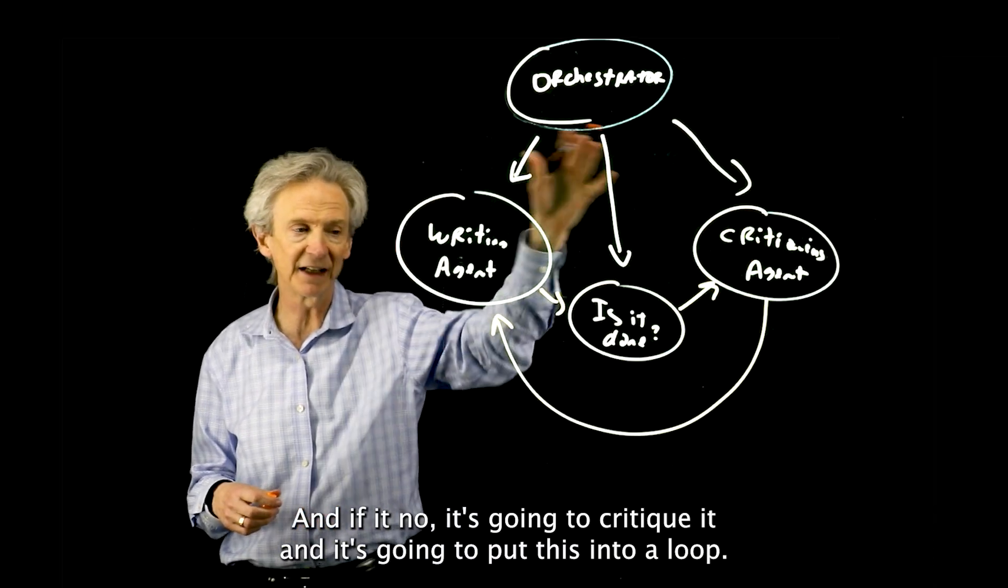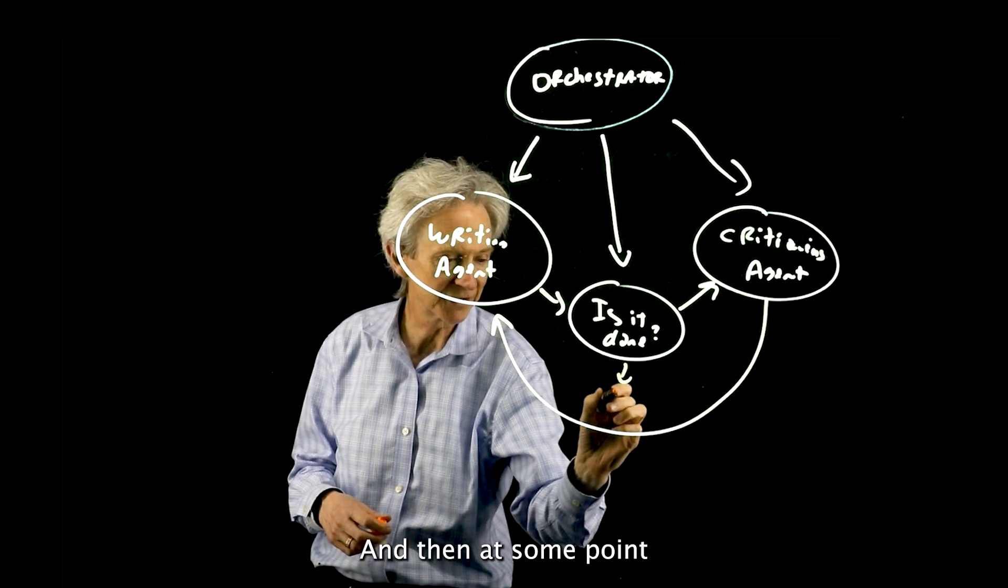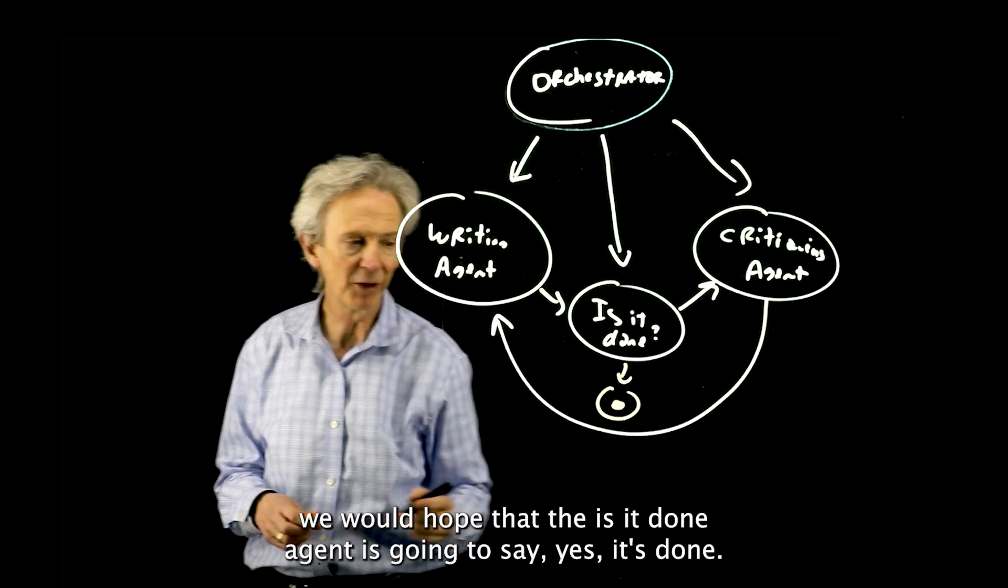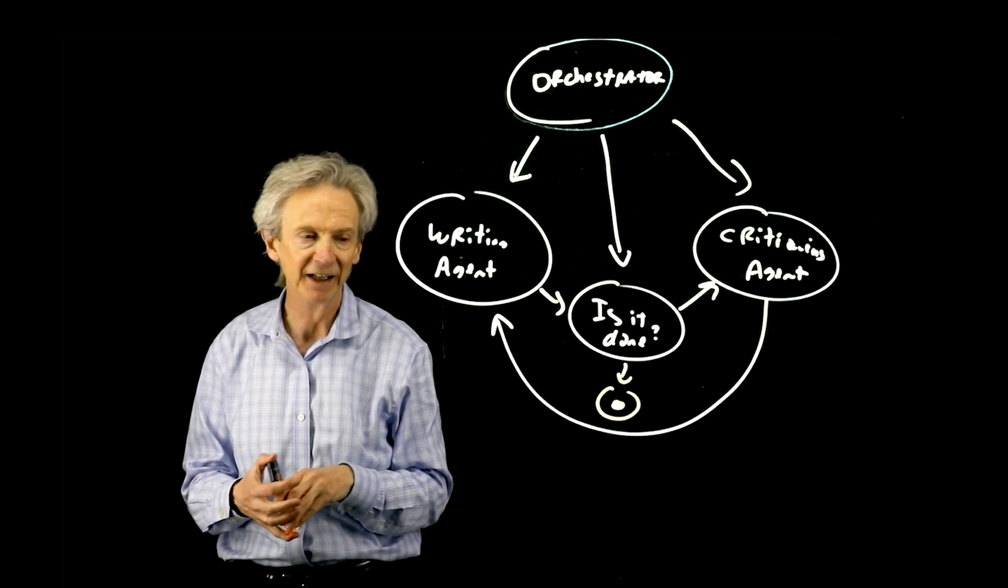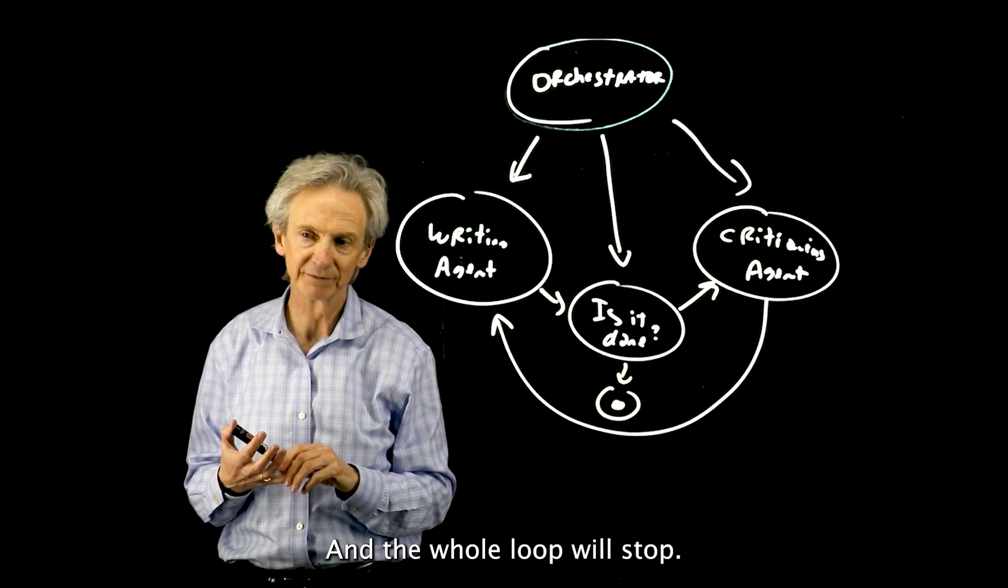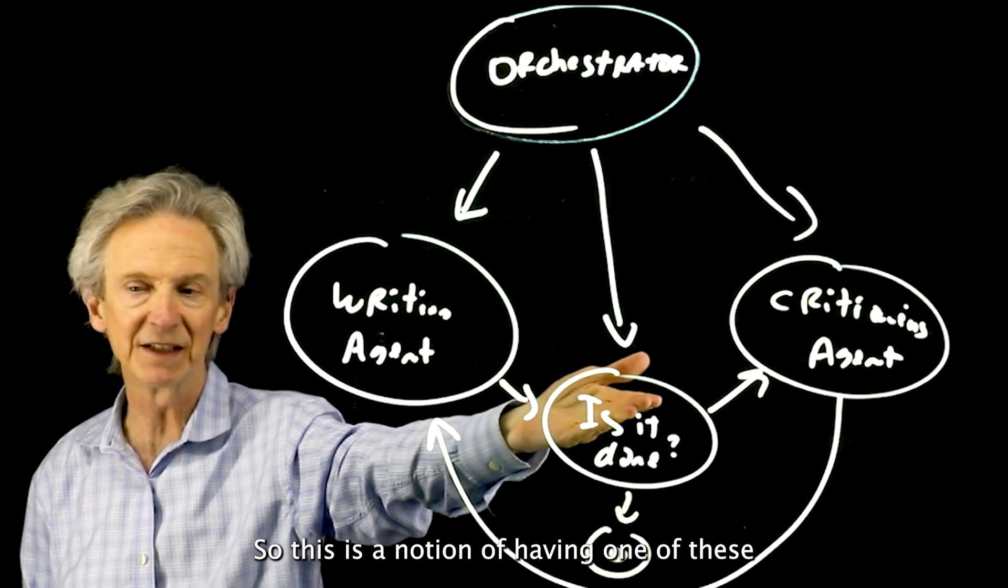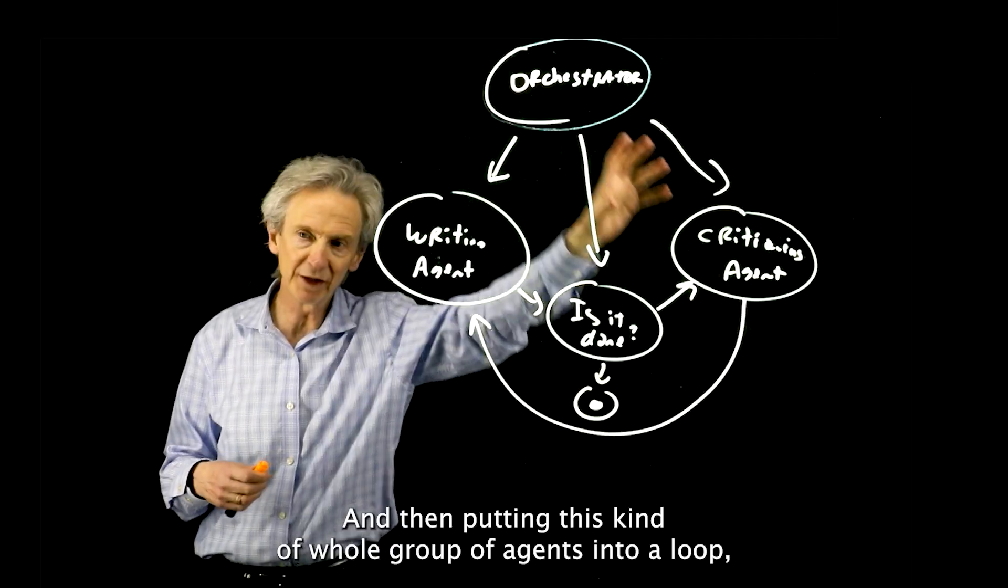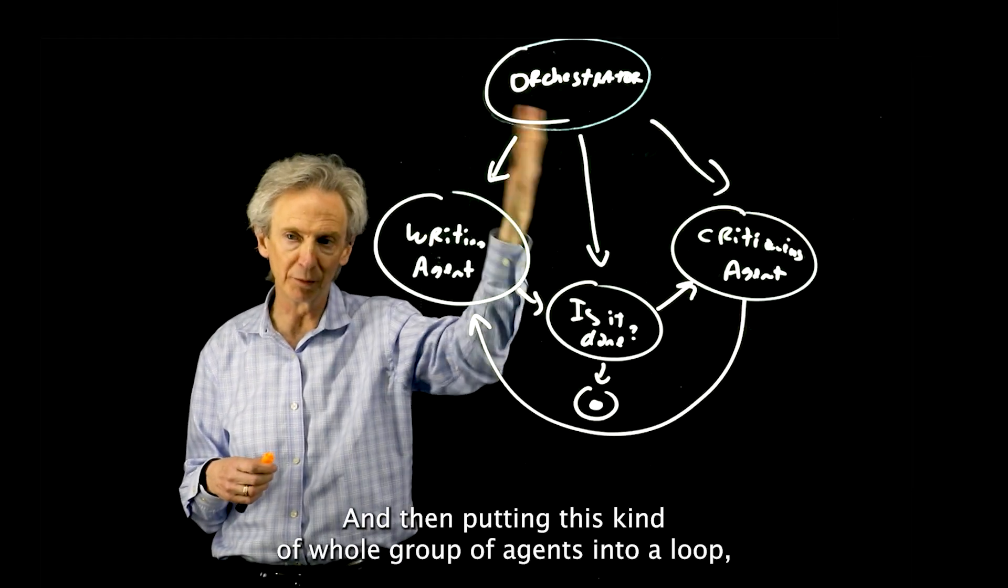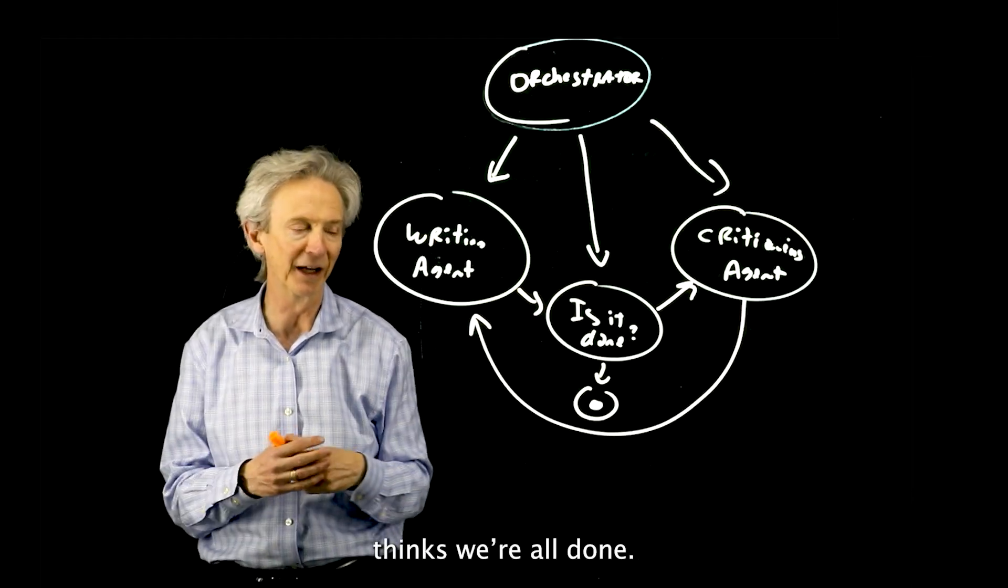So the orchestrator is going to put these in a loop. It's going to write a plan, then it's going to ask if it's done. If it's not done, it's going to ask another agent to critique it, then it's going to ask to write again, then is it done again? And if no, it's going to critique it and put this into a loop. And then at some point, we would hope that the is it done agent is going to say yes, it's done, and the whole loop will stop. So this is the notion of having one of these agents make a decision whether it's done or not, and then putting this kind of whole group of agents into a loop until the is it done agent thinks we're all done.